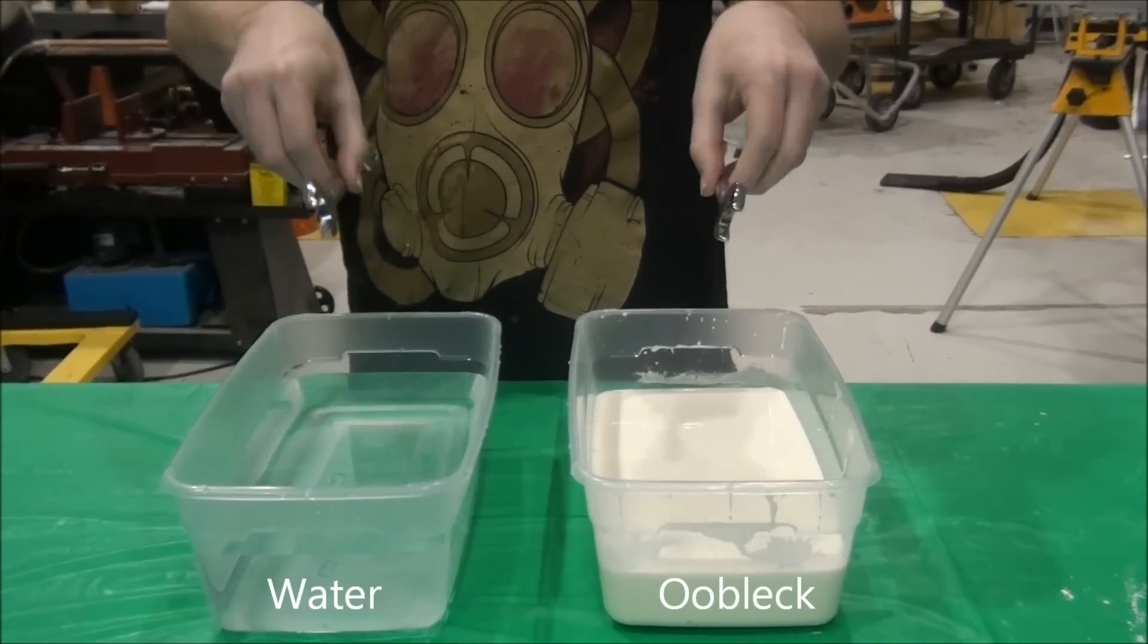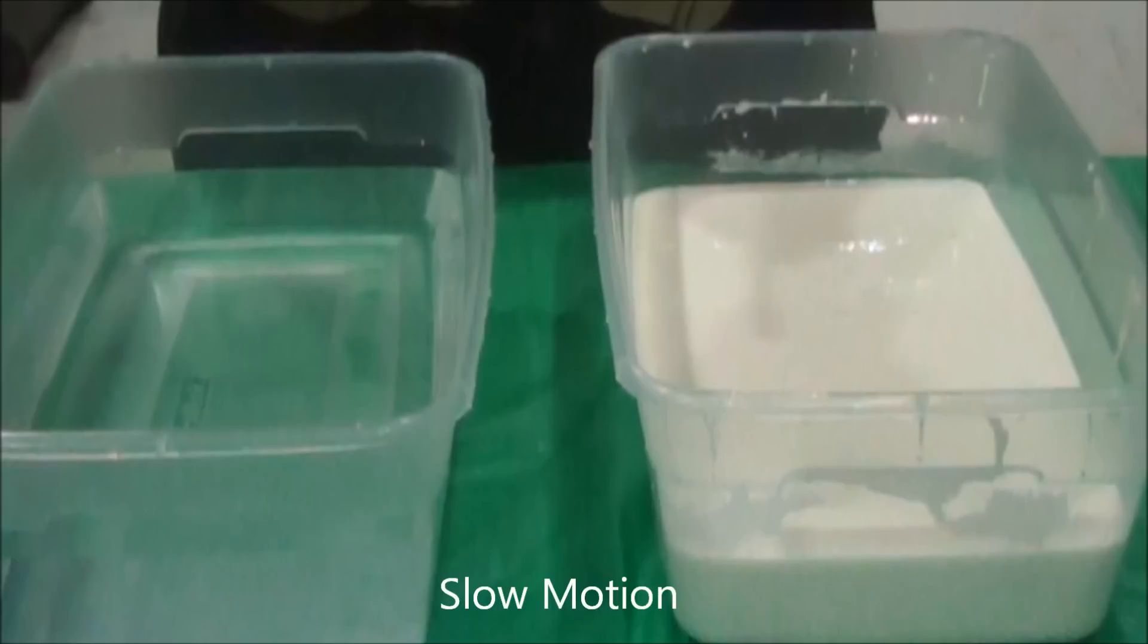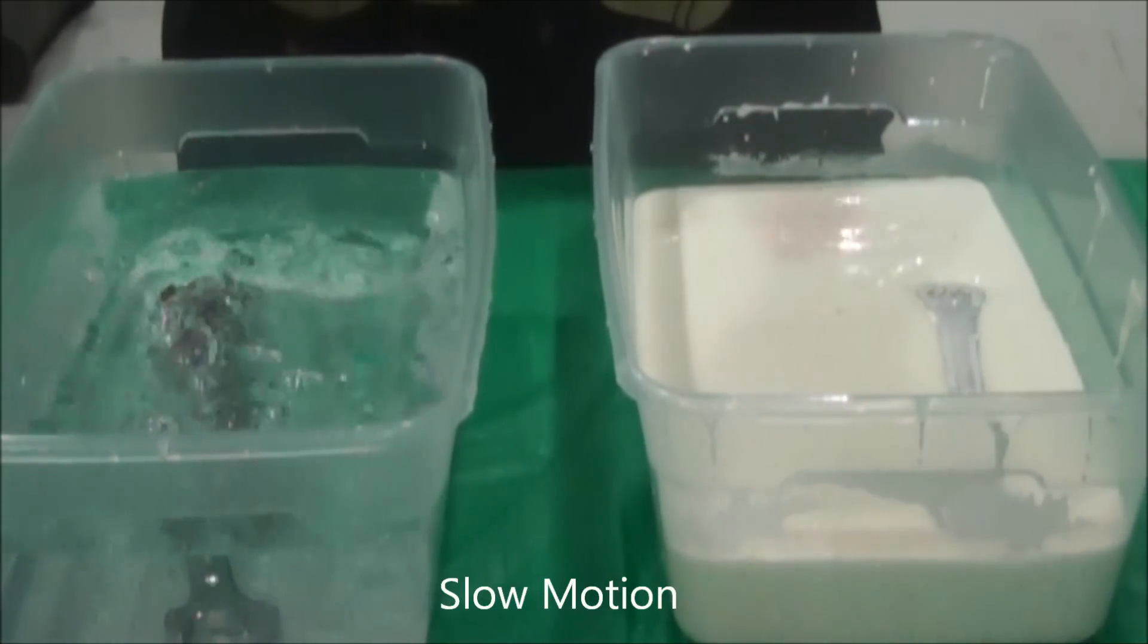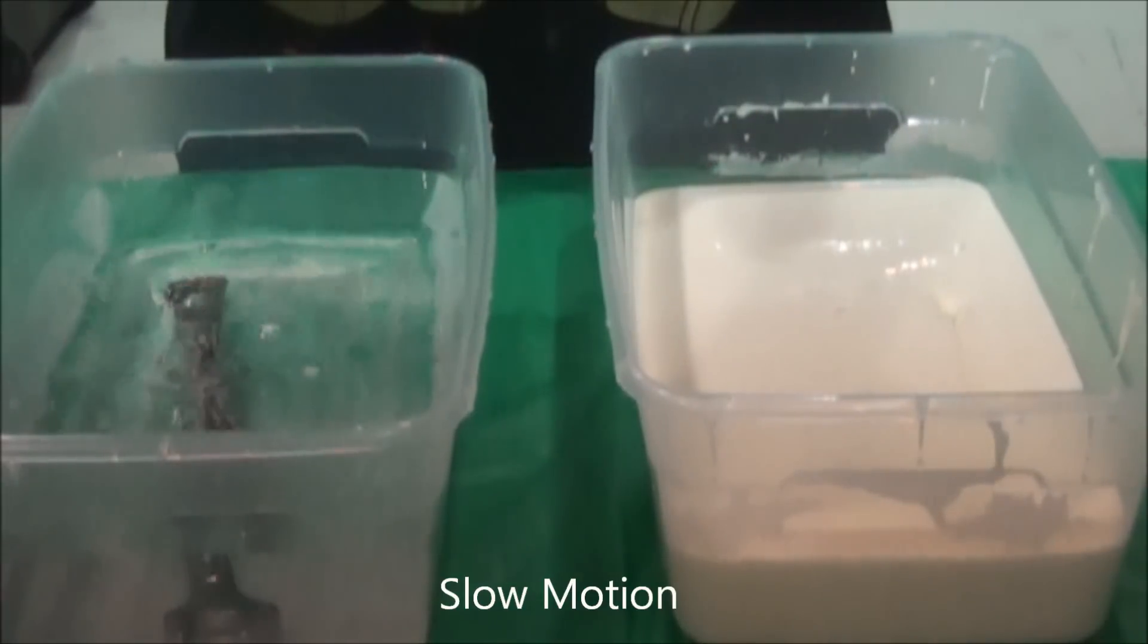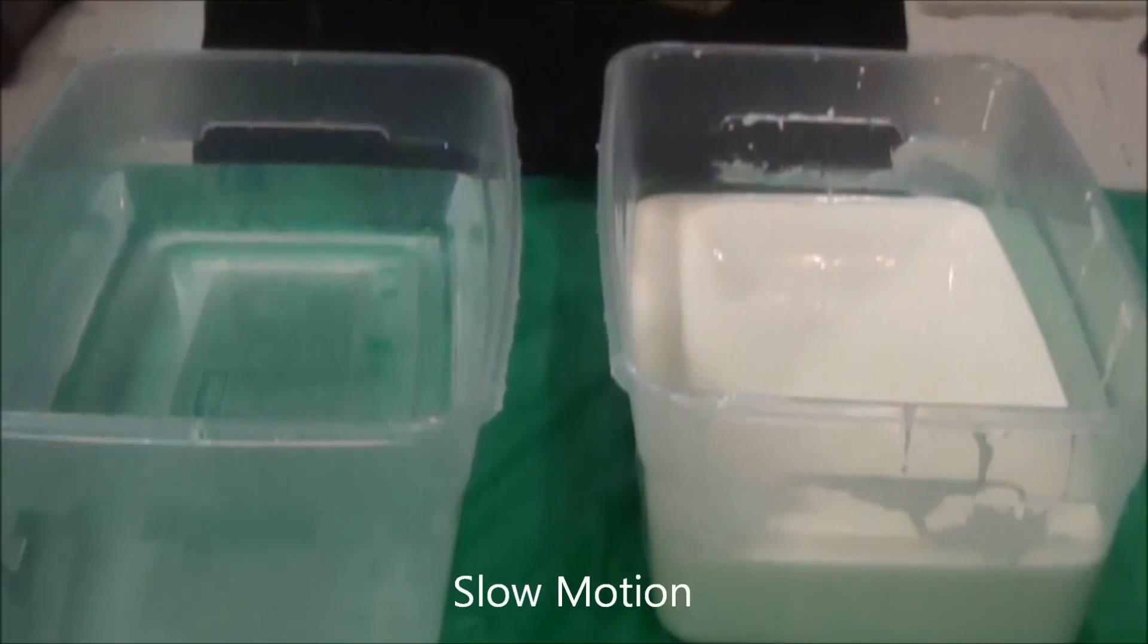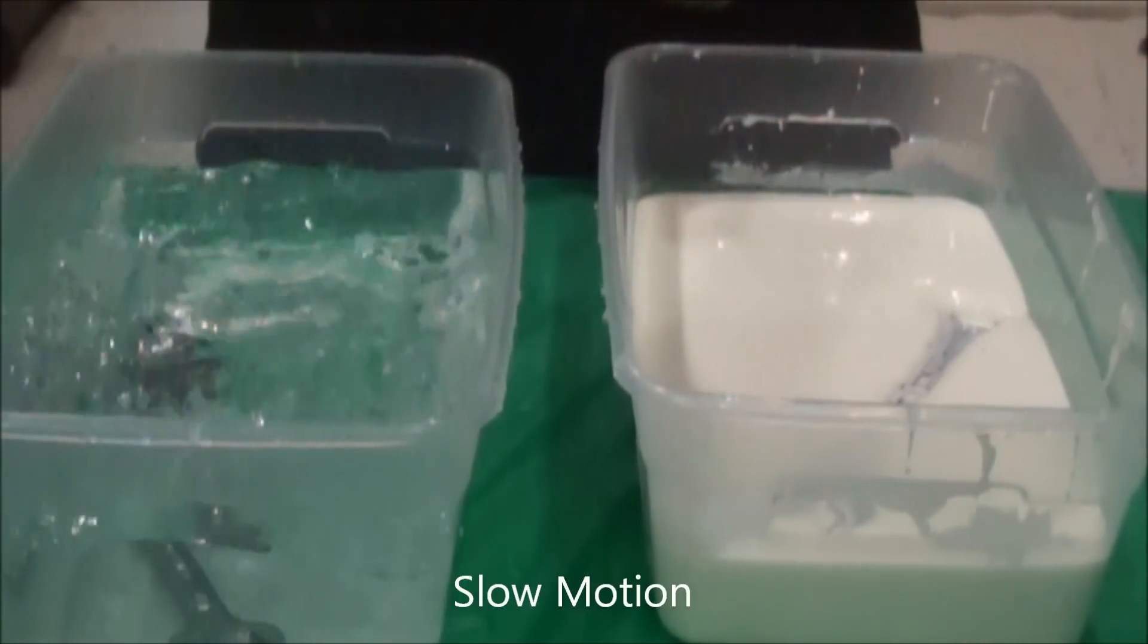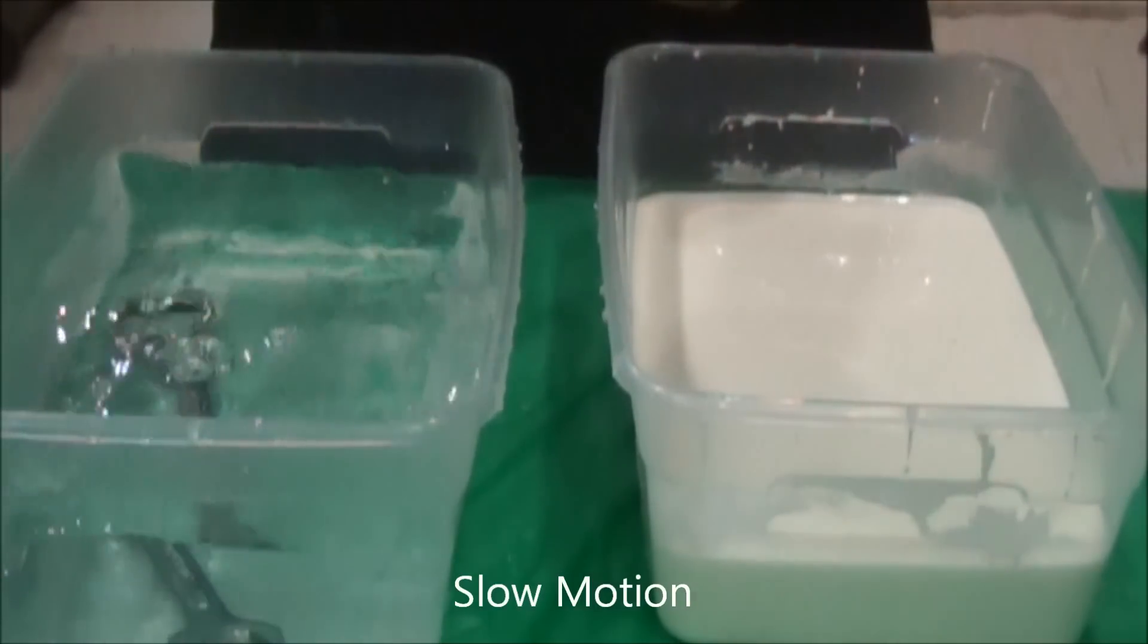See how the wrench sinks into the Oobleck compared to the water. Observe carefully as the wrench hits the surface of the Oobleck. The Oobleck acts like a solid at first because of the high shearing stress applied from the impact, but it then sinks because the gravitational force of the wrench is much lower than the impact force.